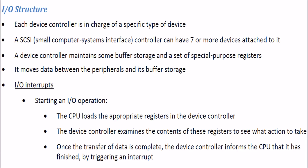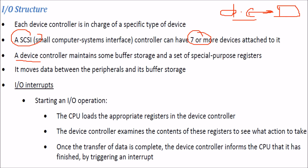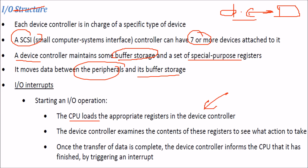Each device controller is in charge of a specific device — for example, SCSI (Small Computer System Interface) can have several devices attached. A device controller maintains buffer storage and special-purpose registers, moving data between the peripheral device and its buffer. When an I/O operation starts, the CPU loads appropriate registers in the device controller, which examines them to determine what action to take. When the transfer is complete, the controller informs the CPU via an interrupt.